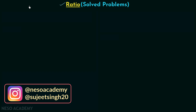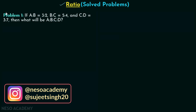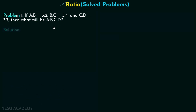Problem number one: a:b = 3:2, b:c = 5:4, and c:d = 3:7. We are required to find a:b:c:d. The first thing we will check is whether we can write a:b:c:d directly or not.